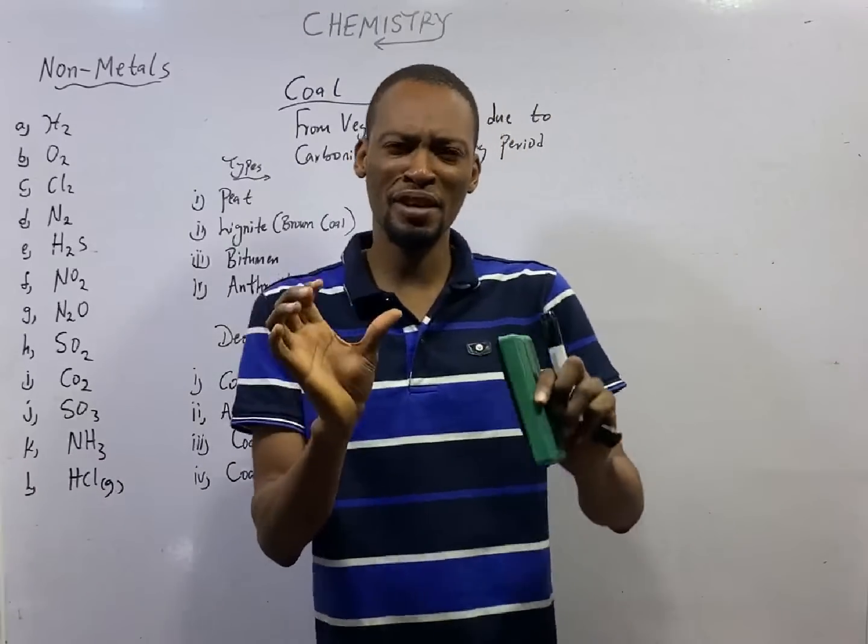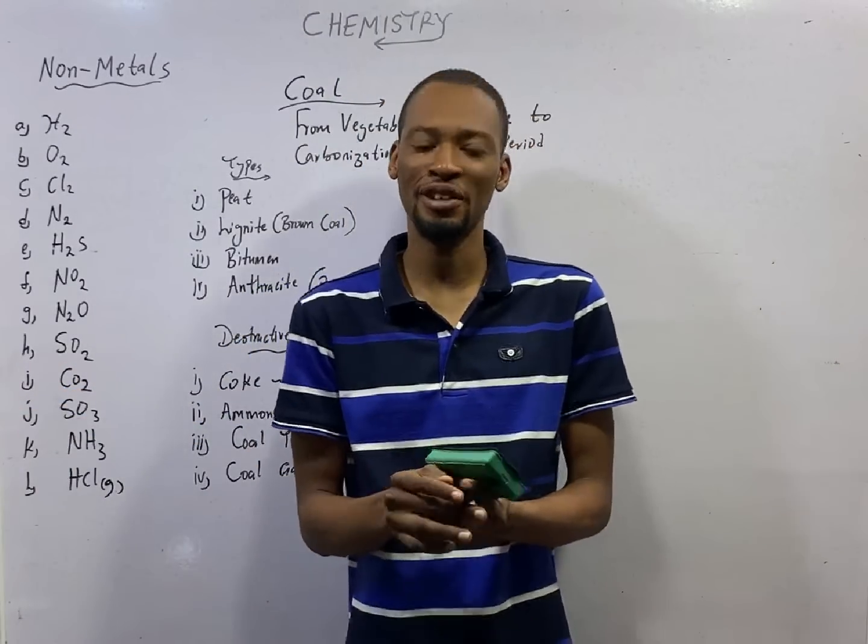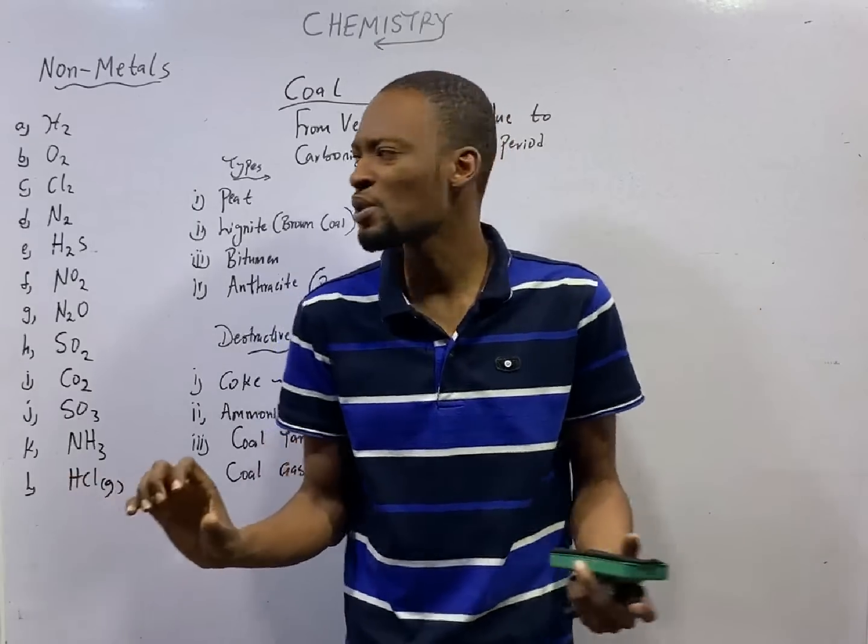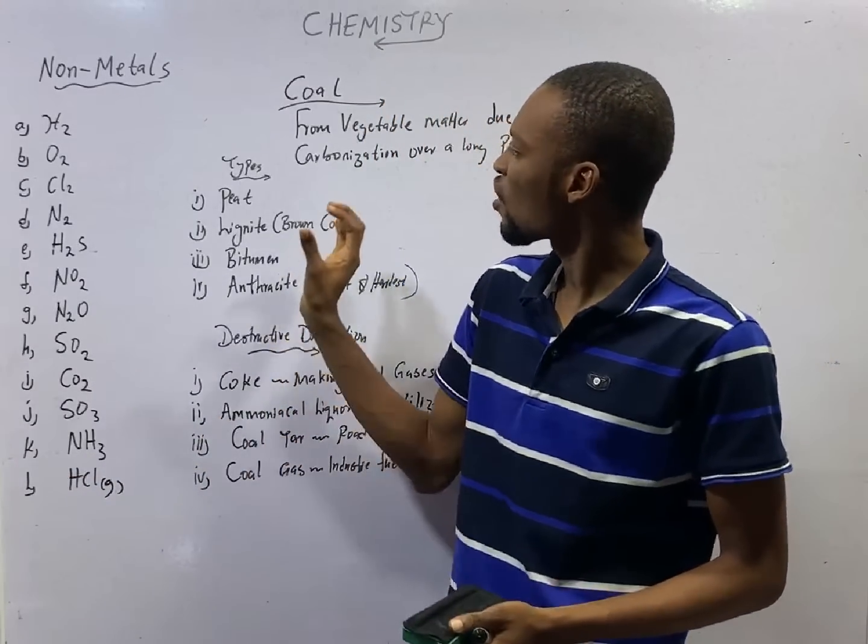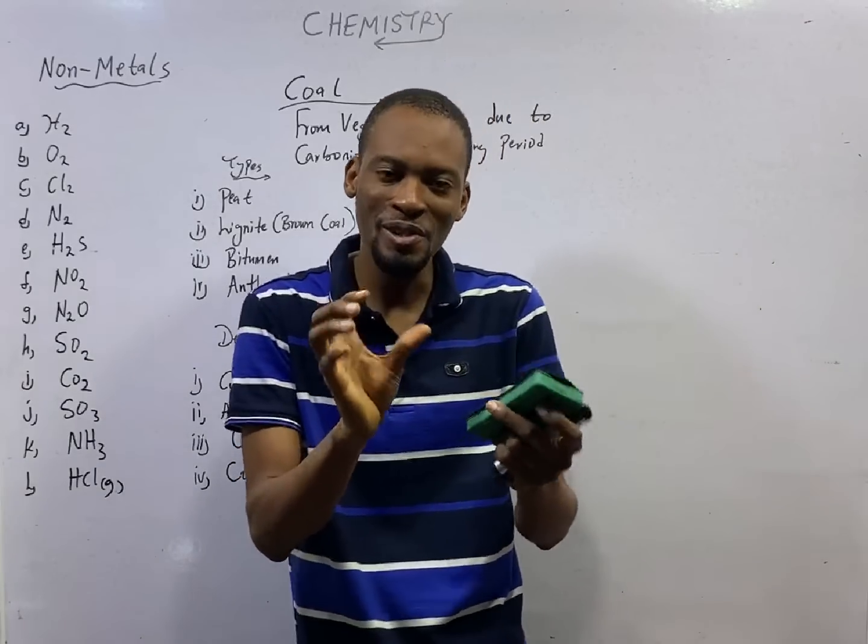This is episode number 55 of the 120 days to JAMB chemistry with Flash Isaac. In this episode, we shall be looking at coal, types of coal, and destructive distillation of coal.